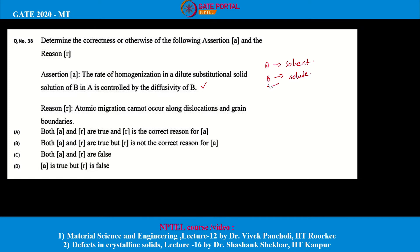So, assertion A is true. But the reason R — that atomic migration cannot occur along dislocations and grain boundaries — is a false statement. Atomic migration can occur along dislocations and grain boundaries, where vacancies or other defects can move along these paths. So, assertion A is true but reason R is false, making option D the correct answer.